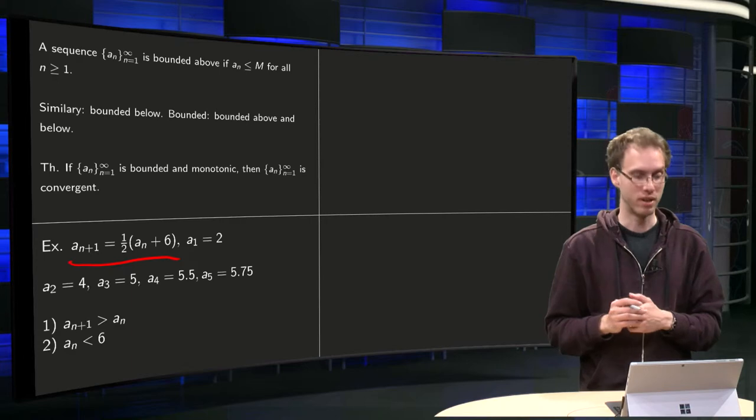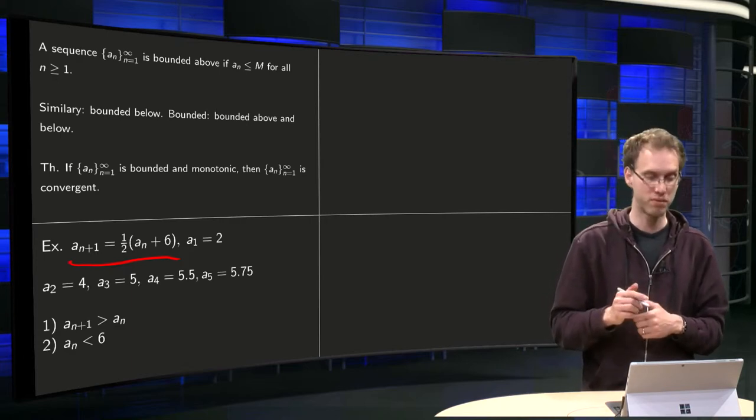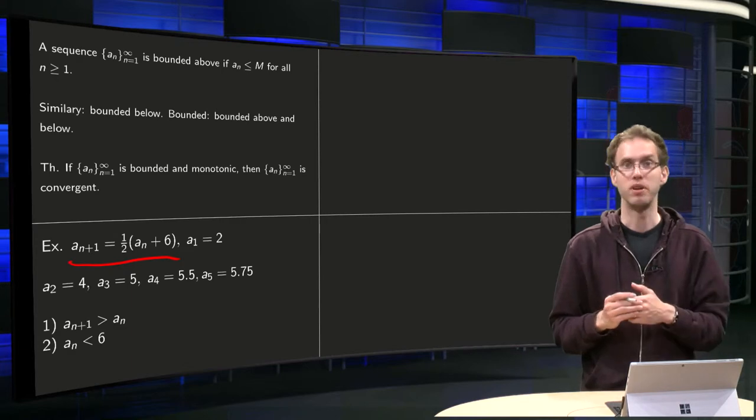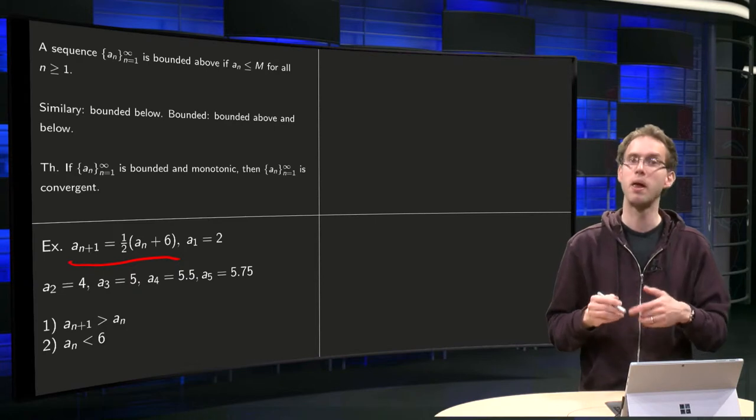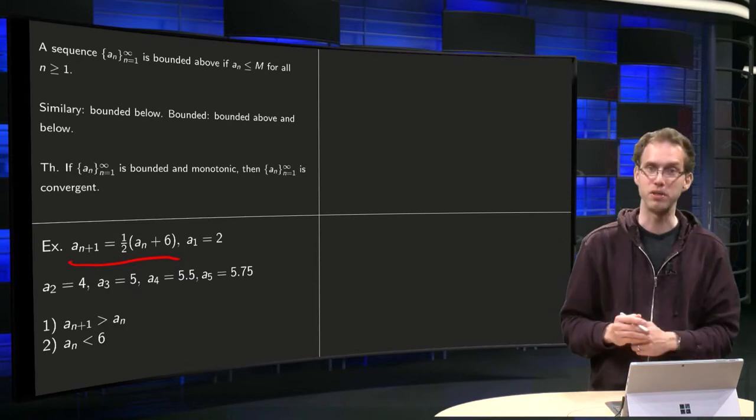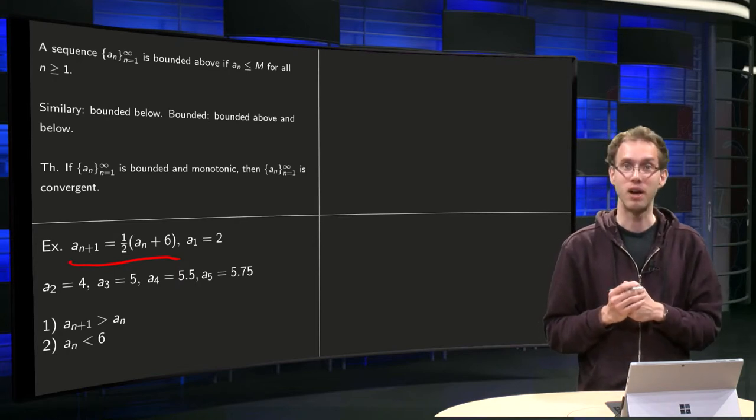And then the next number equals 1/2(4) + 6 = 1/2(10) = 5. Then we have our next number equals 1/2(5) + 6 = 1/2(11) = 5.5. And then we go on and we have 5.75. I think you already see what's going to happen.